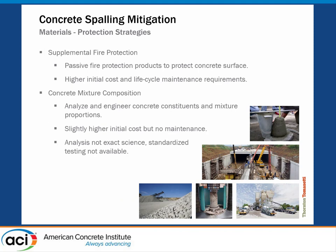From a material standpoint, there are two main protection strategies. First, supplemental fire protection — some kind of passive fire protection surface applied to protect the concrete surface. This has a higher initial cost and lifecycle maintenance requirements, so the owner must be okay with maintaining and supporting it. Alternatively, we can optimize the concrete mixture composition from the very start of the project, looking at how constituents and mixture proportions work together, even doing testing and petrographic analyses to mitigate spalling risk. Slightly higher initial cost, but no maintenance — whatever you do to that mix is inherent in the mix design.